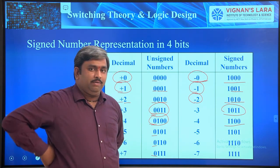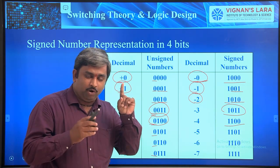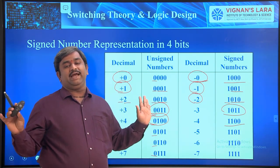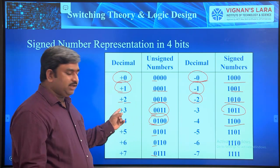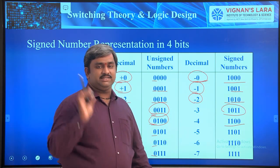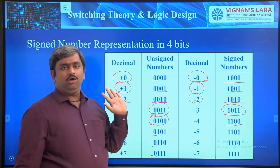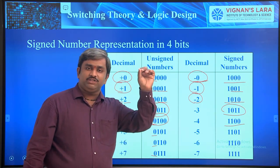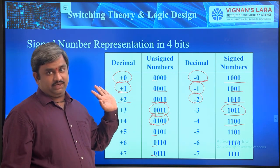It is a simple concept. In a given problem, if it is mentioned that the number is a signed number, automatically you do signed operations — signed addition, signed subtraction, signed division. Otherwise represent it as an unsigned number. If they are not representing any sign, that is an unsigned number. If they represent anything, it is automatically a signed number. The first bit is automatically the sign bit; otherwise it is unsigned information.